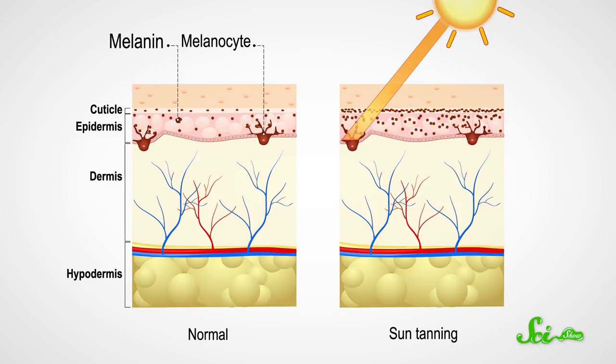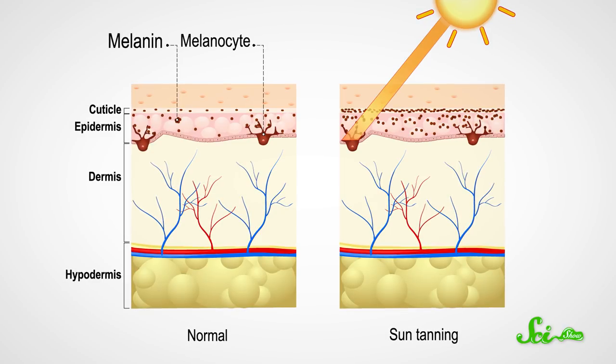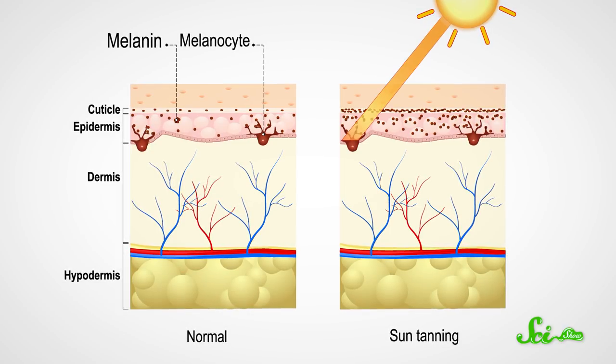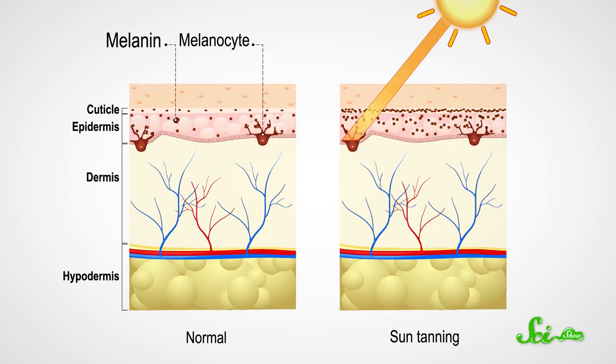Because UVA, the less energetic type of UV, can pass through glass. UVA mainly causes tans, where your body releases a light-absorbing chemical called melanin to stop the UVA from doing too much damage to your skin cells. The melanin is what darkens your skin.